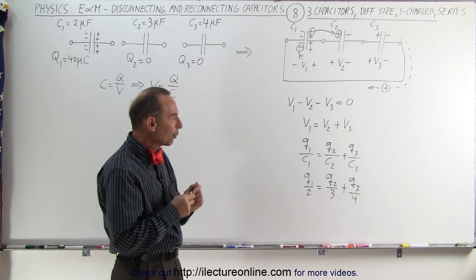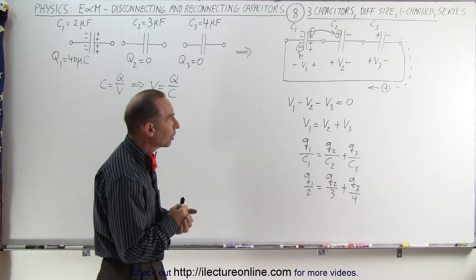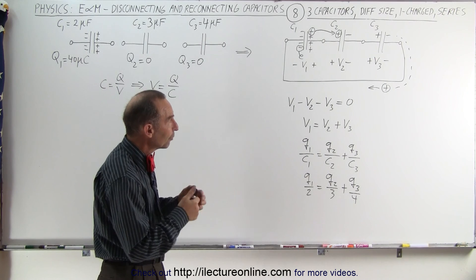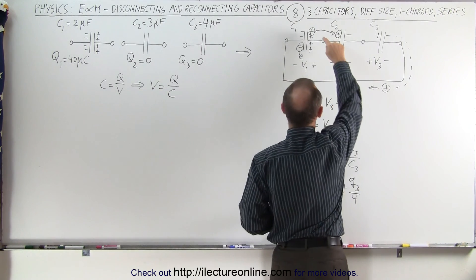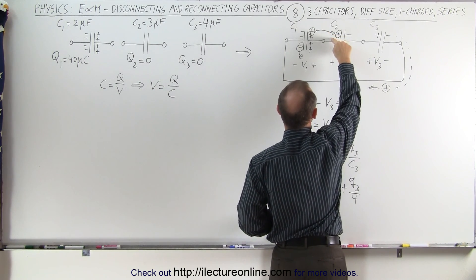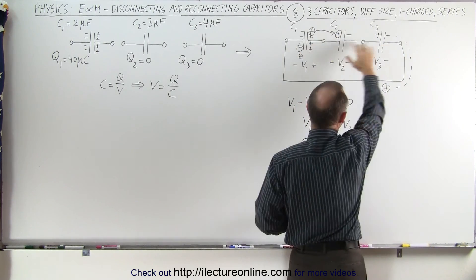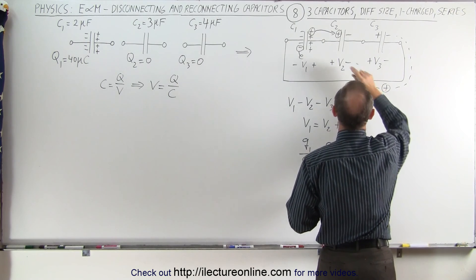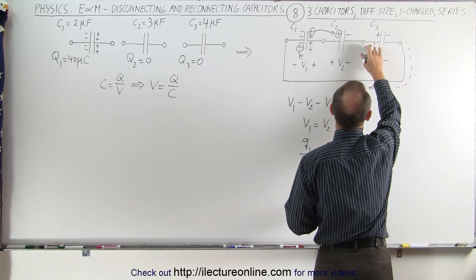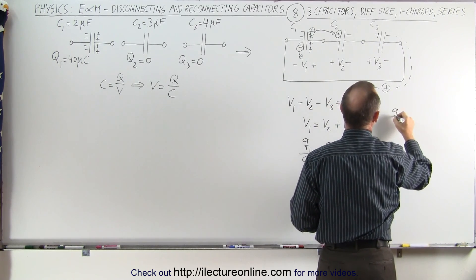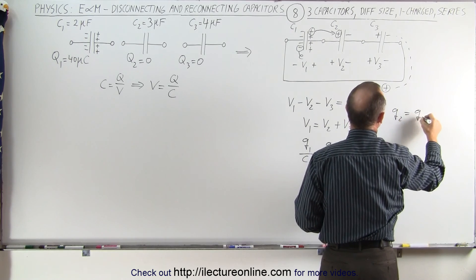Now, we need to find two more equations relating these charges to one another. Well first of all, we again realize that if one charge moves from C1 to C2, a charge has to move from C2 to C3 because we have a series connection here, which means that whatever moves on to C2 also moves on to C3, therefore Q2 must equal Q3.